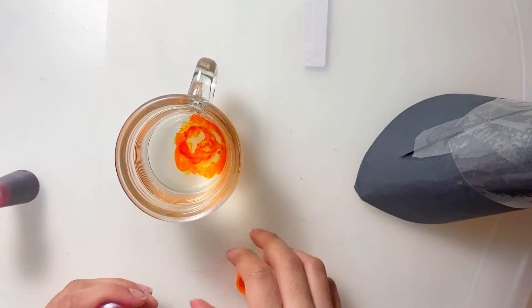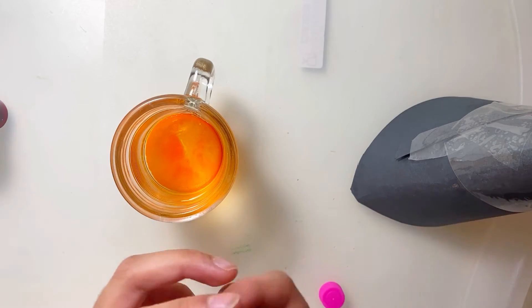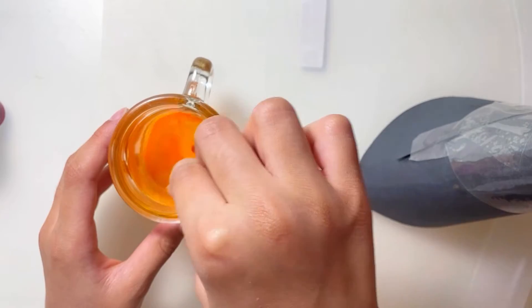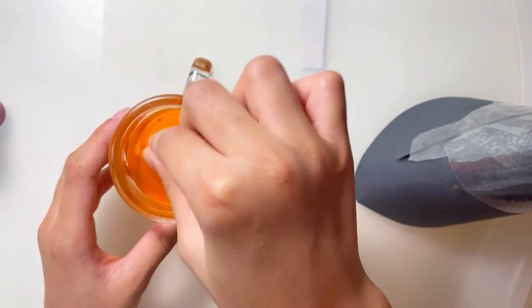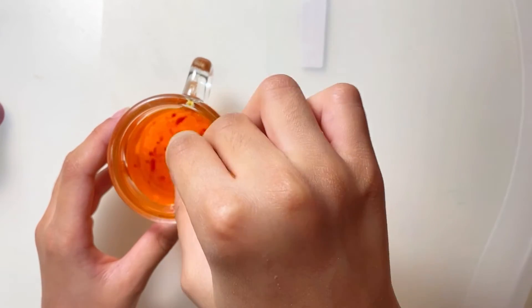I'm adding pink because it doesn't mix very well with the vinegar and forms little bits. So when it explodes, there's going to be little bits of pink in the volcano, and that will make it look more like a real volcano.